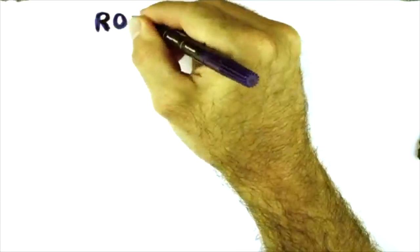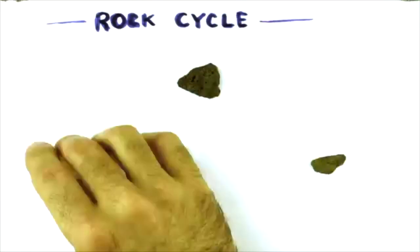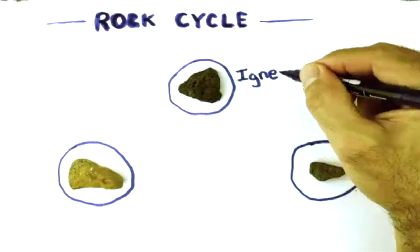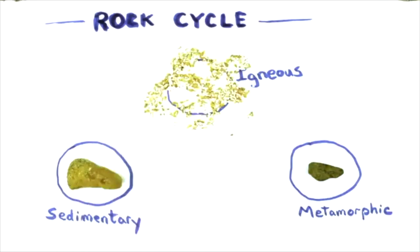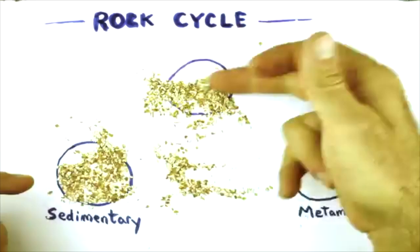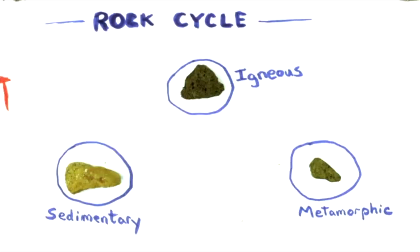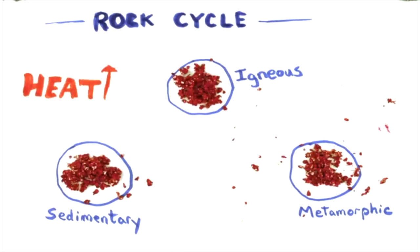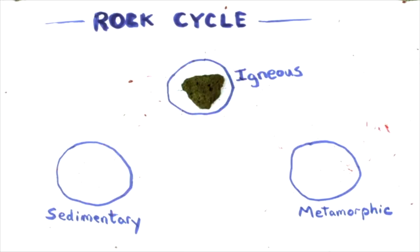If you were to look at a rock cycle, you would see that any of the rocks, if they get broken down into little pieces, they can reform into sedimentary rock. If you take any of the rock types and you heat them up until they become molten magma, when they cool they'll become igneous rock.